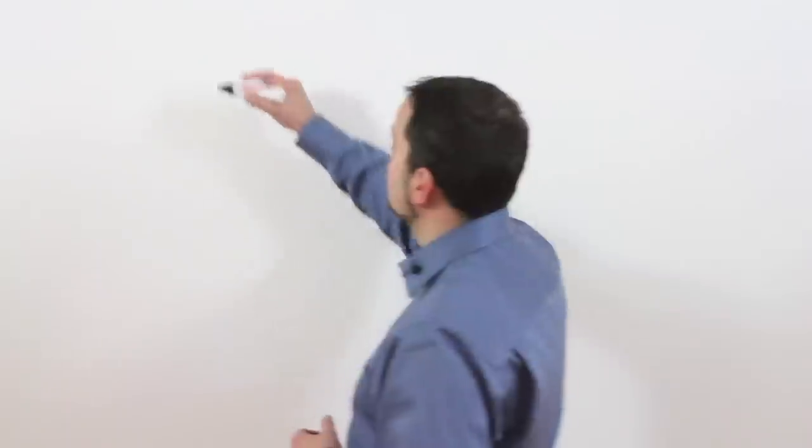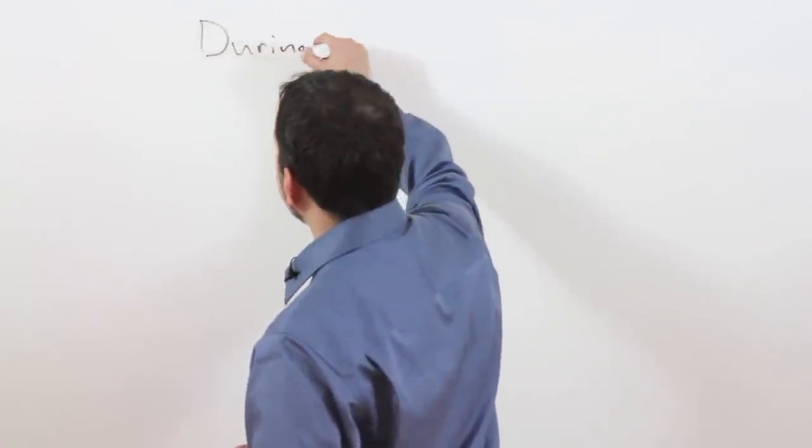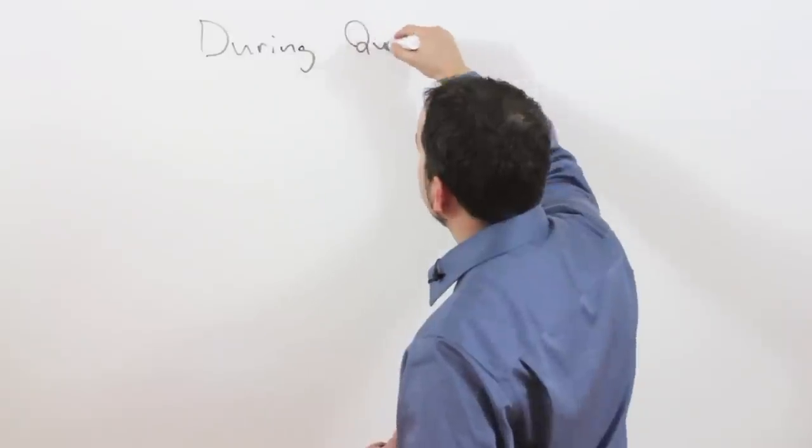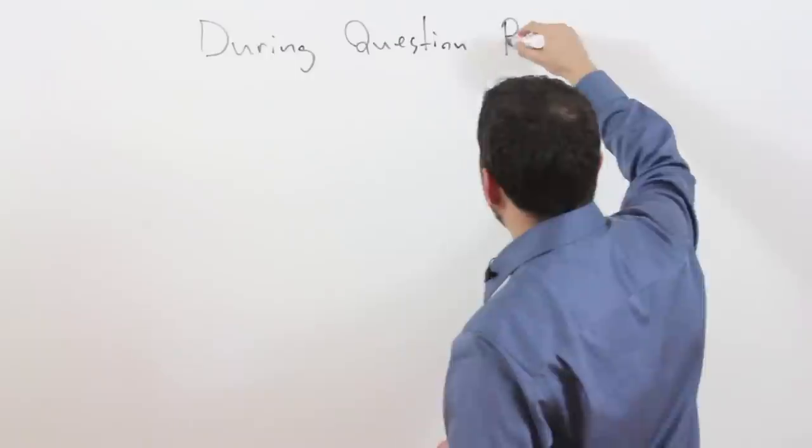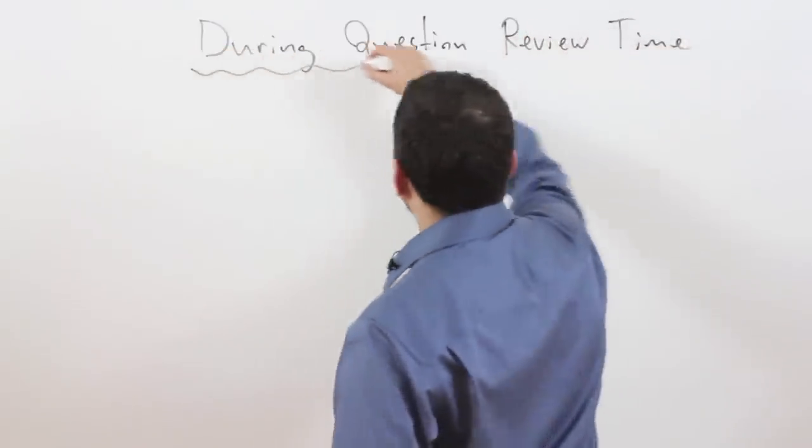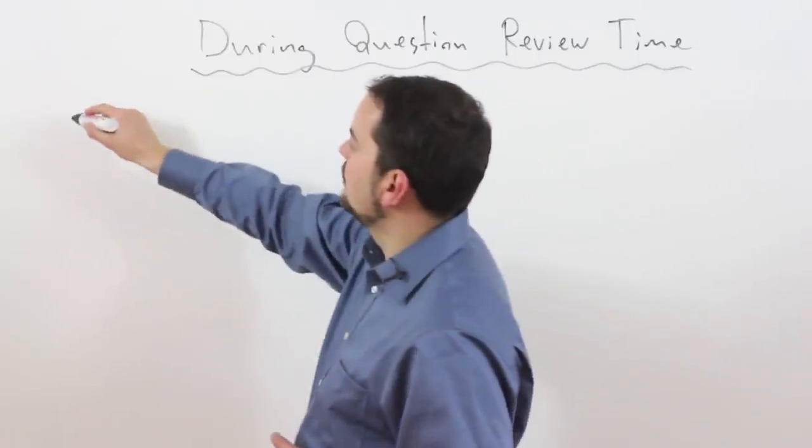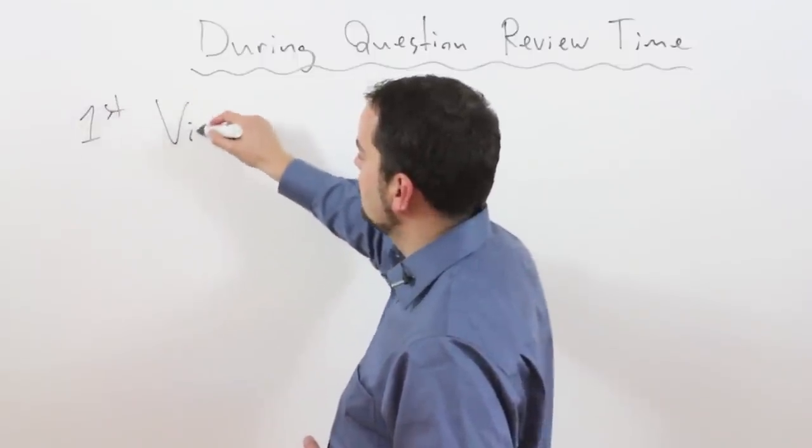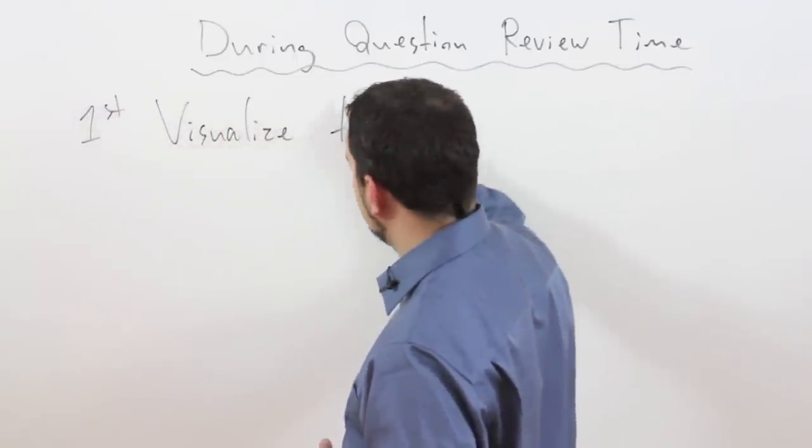During the few seconds that you have to review the section questions, the first step that you need to do is try to visualize the topic. This will help prepare your brain for the information that's coming. So during question review time, the first step is visualize the topic.